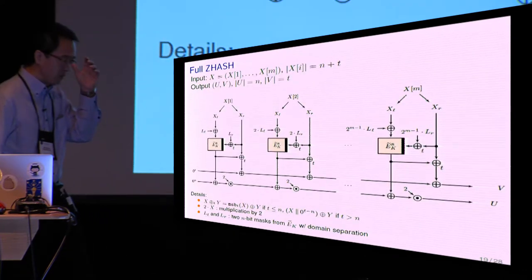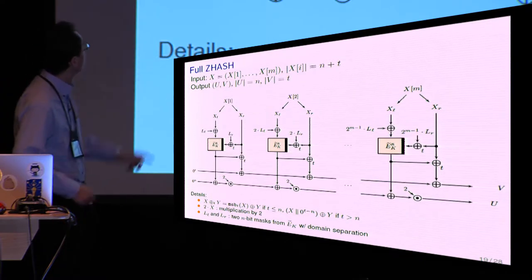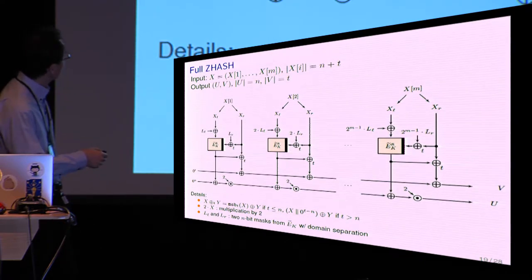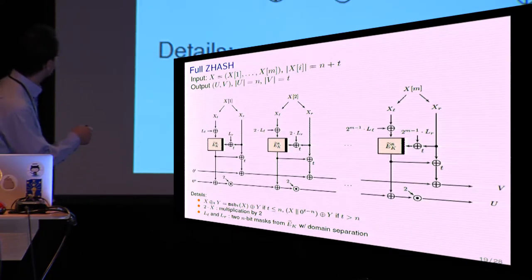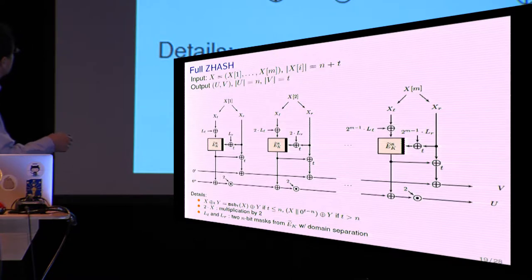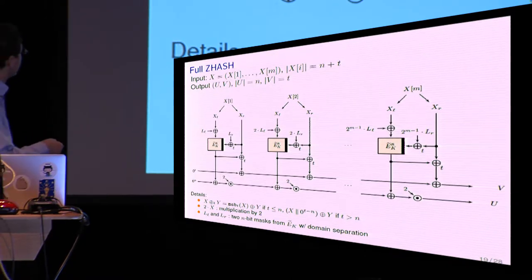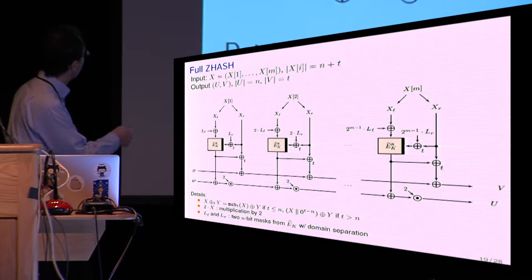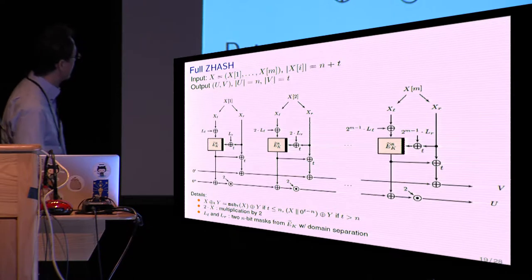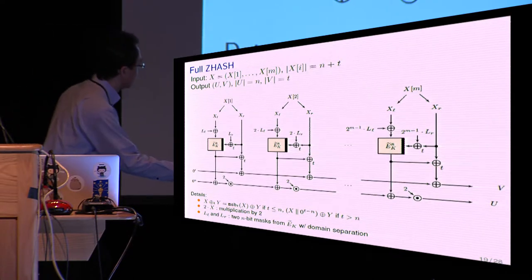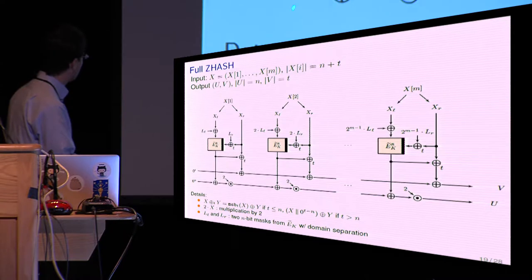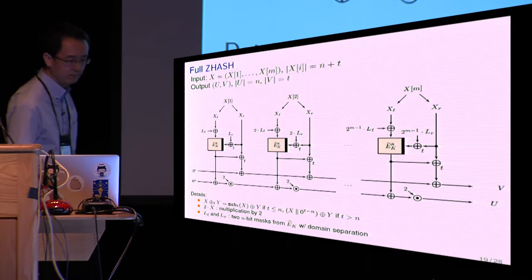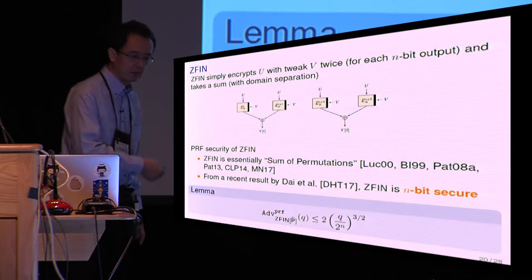So based on these observations, the whole Z-hash is here. As you can see, each message is divided into n+t-bit blocks. And as you can see here, this is the XT tweak extension, using this tilde E as an underlying TBC. And this shows the one-round Feistel-like permutation. And here is the larger chaining scheme of having n+t-bit.